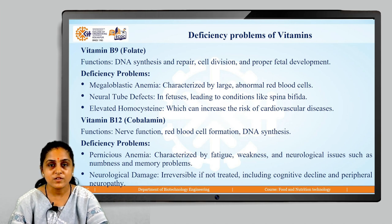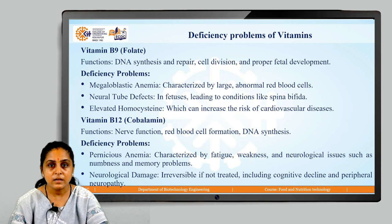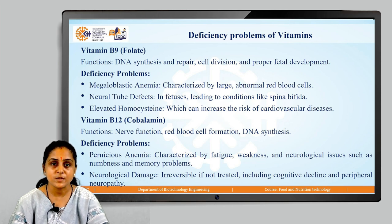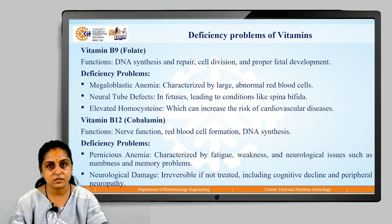Vitamin B12, also known as cobalamin. The functions of cobalamin in our body involve red blood cell formation and DNA synthesis. The deficiency problems of this vitamin involve pernicious anemia and neurological damage.